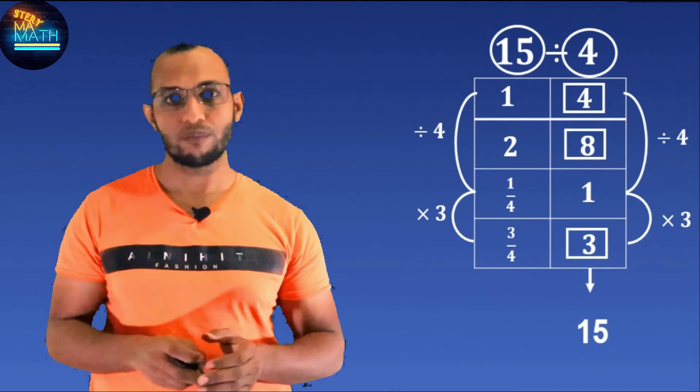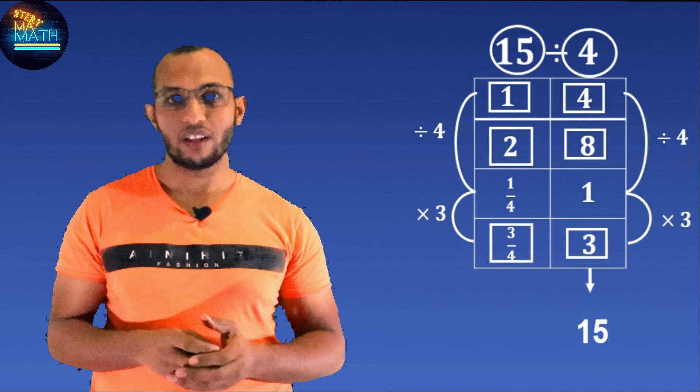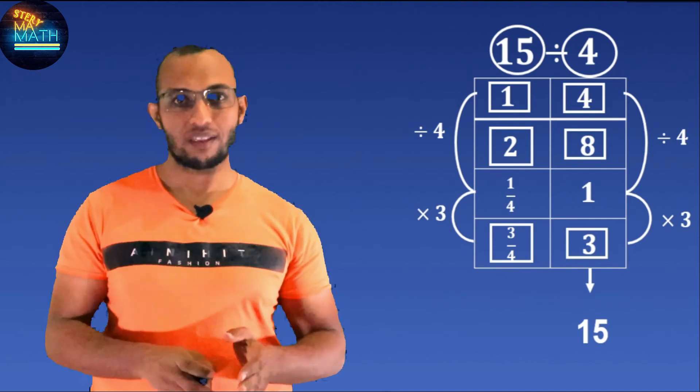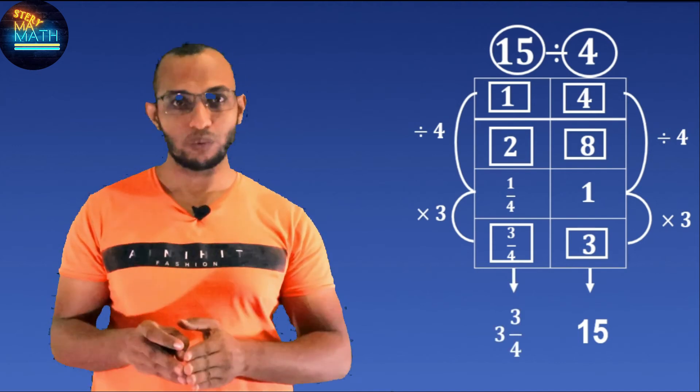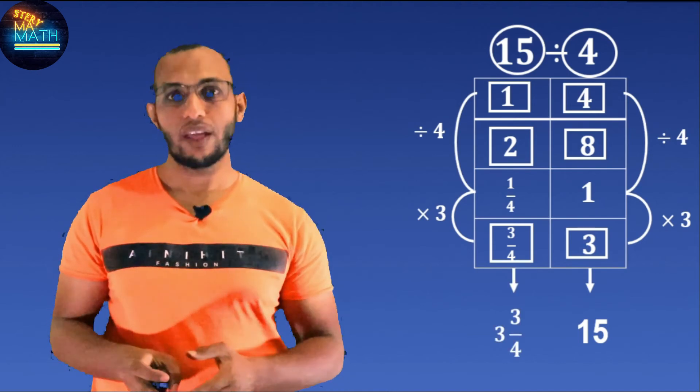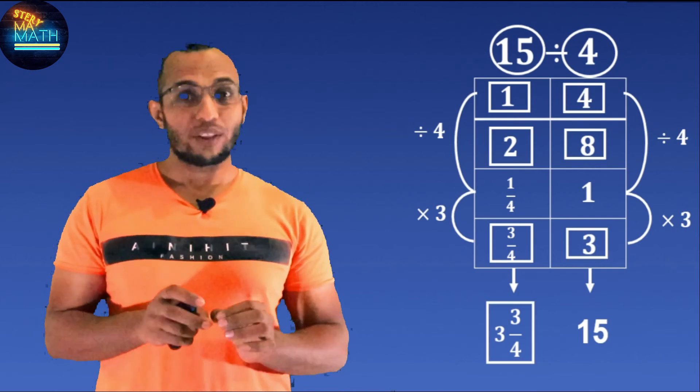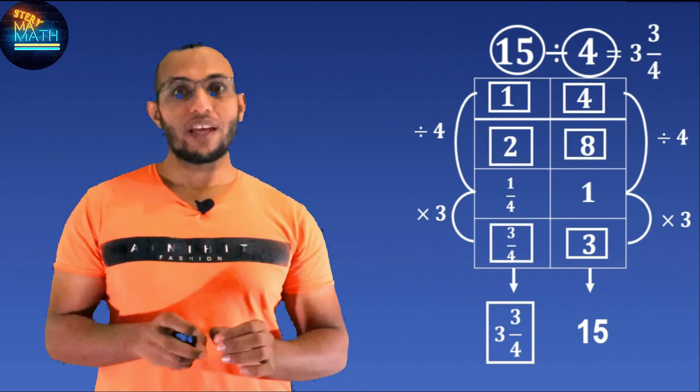Now again, add up the numbers that result to 15. You get 4, 8, and 3. So the numbers aligned to this are 1 and 2 and three-fourths. That, if you add it up, you get 3 and three-fourths, and that is the quotient. So simple.